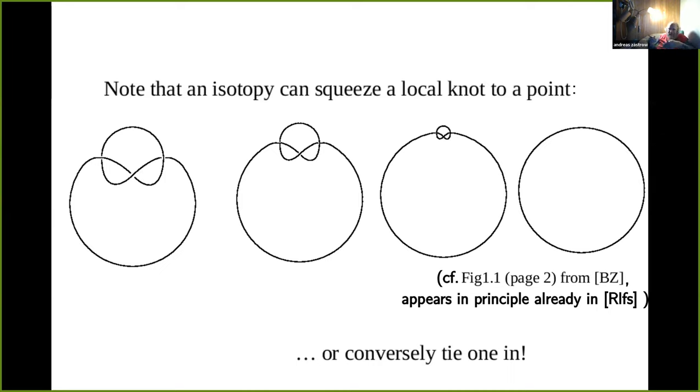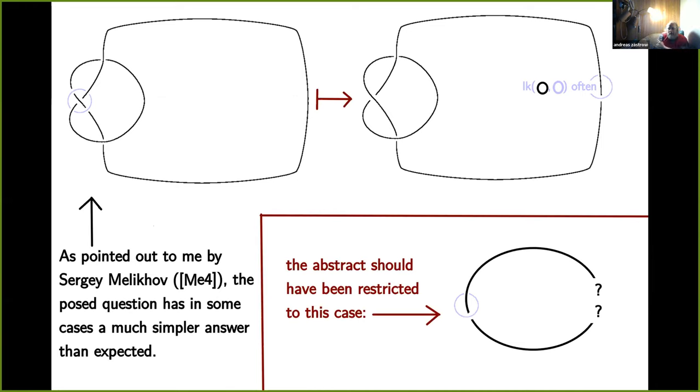Usually in first lecture of knot theory the lecturer shows a picture and explains that knot theorists classify their knots up to ambient isotopy, another equivalence, because they want their results to coincide with the experience of real life strands. My question was asked for ordinary isotopy also called topological isotopy and we have to keep in mind that we can always squeeze down a local knot to a point or conversely tie one in.